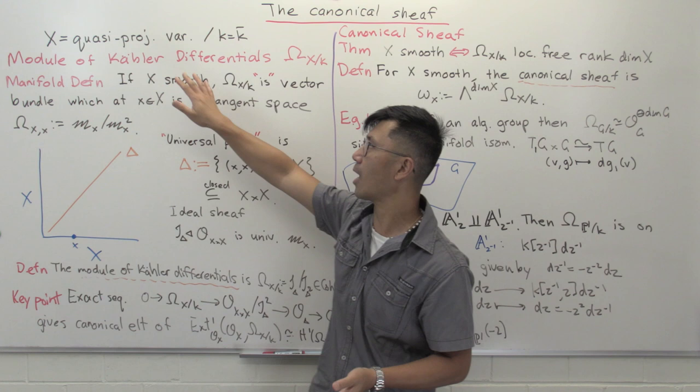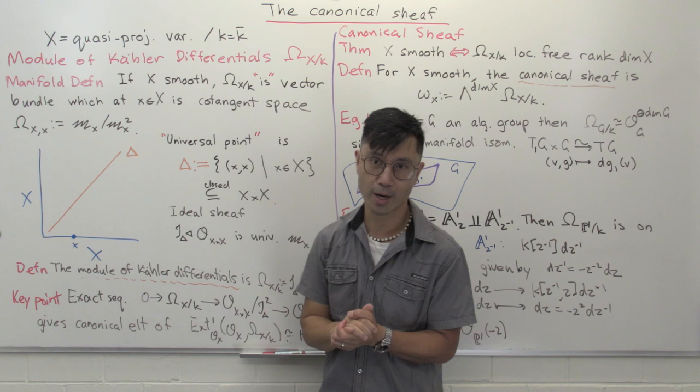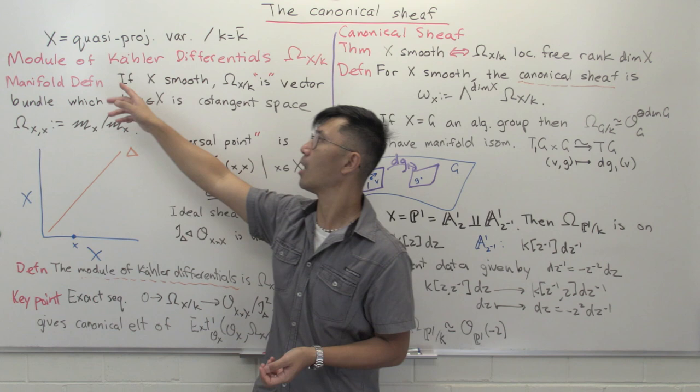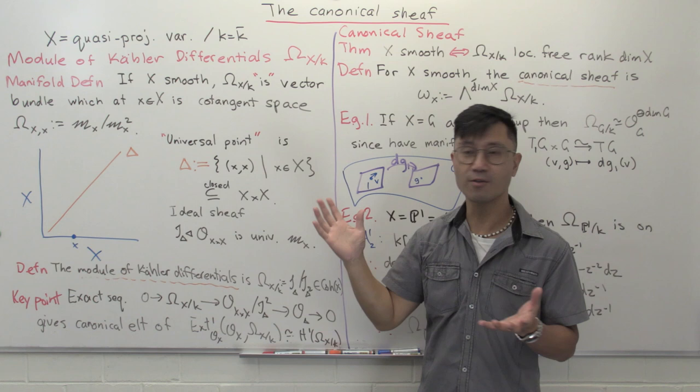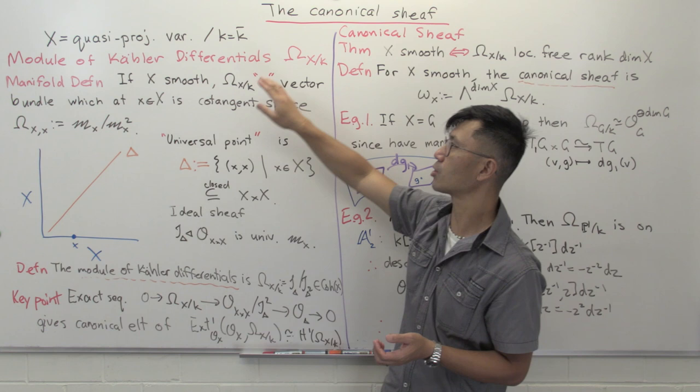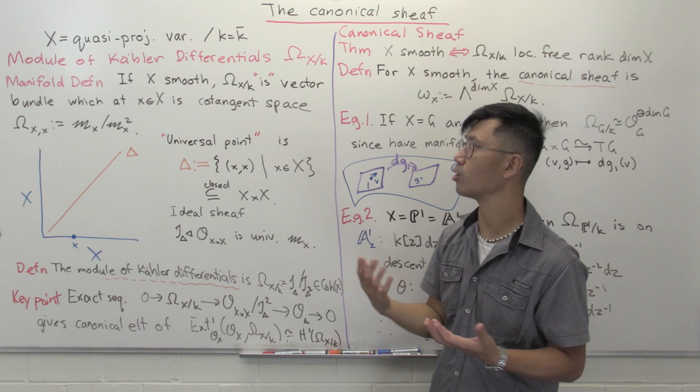Our setting will stick to the simple case where we're looking at X as some quasi-projective variety over an algebraically closed field. To define the canonical sheaf, I first want to look at the module of Kähler differentials, which is often denoted with omega. This is a relative concept, so you can do it in any sort of relative setting. Here we'll just look at this quasi-projective variety X over the algebraically closed field it's defined over.